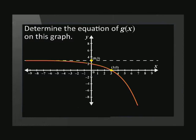Determine the equation of g of x on this graph. g of x equals negative 2 times b to the power of x minus 2 plus q. The value of both a and p are given and they are both equal to negative 2. We still need to determine the value of b and q.